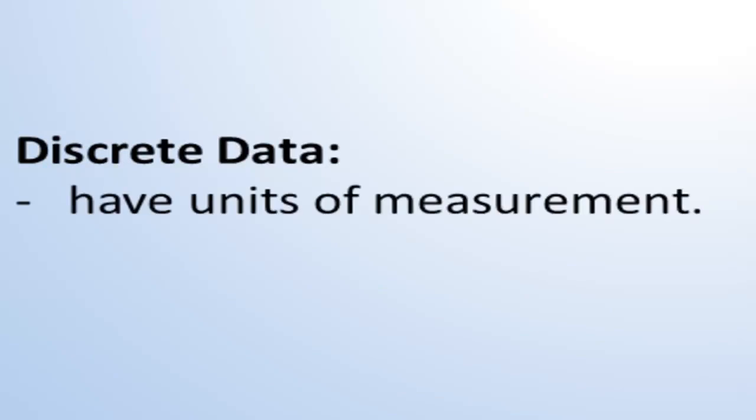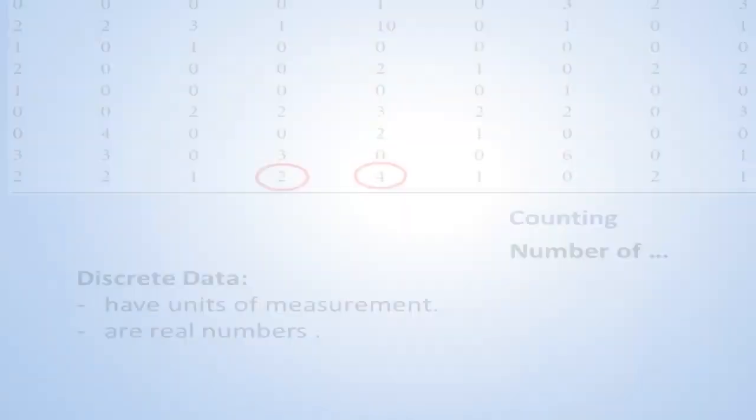In short, metric discrete variables can be counted and can have units of measurement - number of things. They produce data which are real numbers and are invariably integers. Let's talk about the second type of metric data, which is continuous metric data.